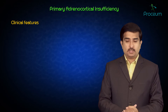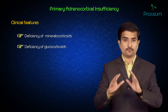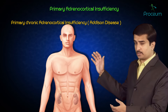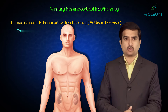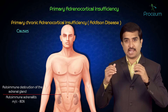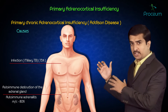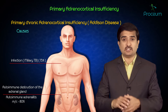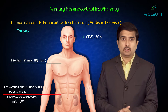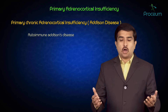Due to adrenocortical insufficiency there will be deficiency of both mineralocorticoids and glucocorticoids. Primary chronic adrenocortical insufficiency, also called Addison's disease, is most commonly caused by autoimmune destruction of the adrenal gland (autoimmune adrenalitis), accounting for approximately 80% of cases worldwide. In 15% of cases, infection is the most common cause — specifically miliary TB, which is the most common cause in India. AIDS is also an important cause, seen in approximately 30% of patients.